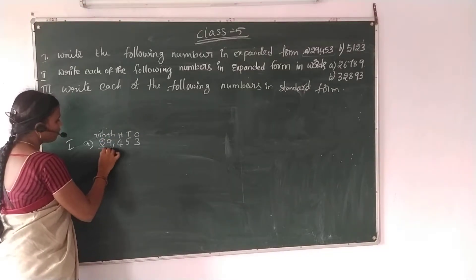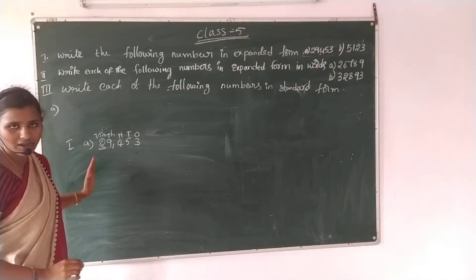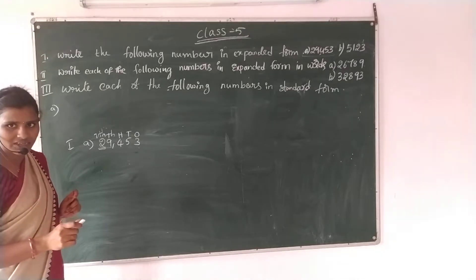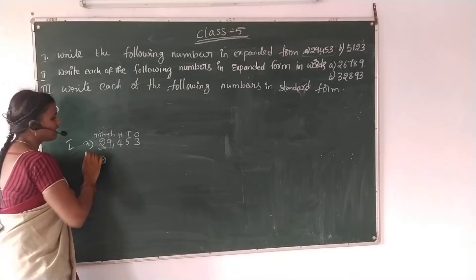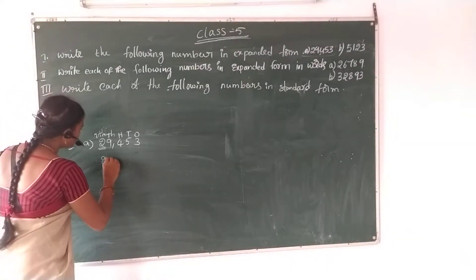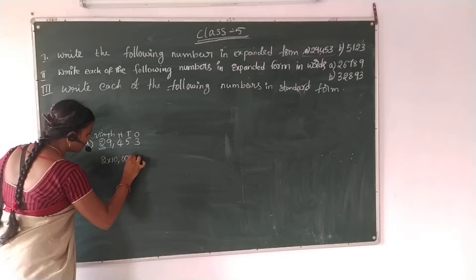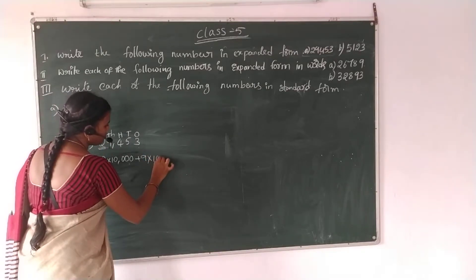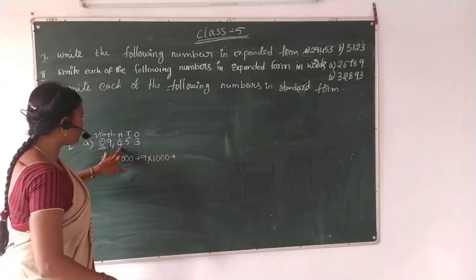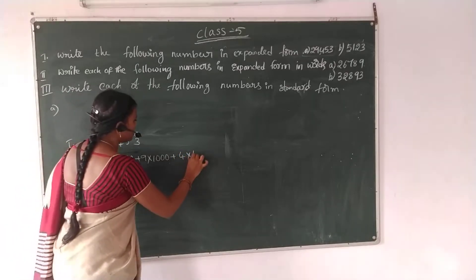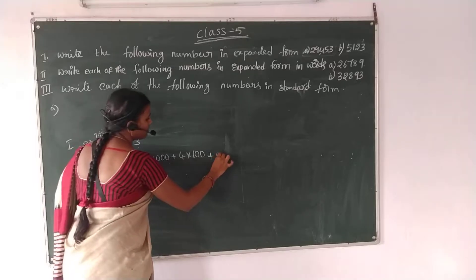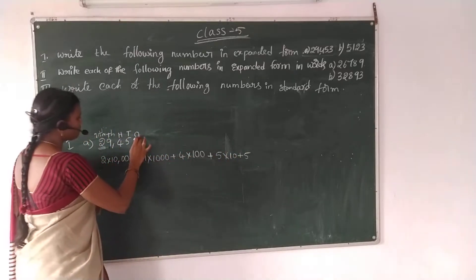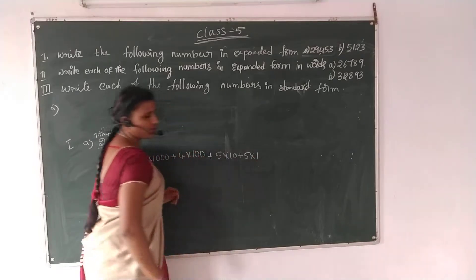Come left to right. First, what is the place value? The number is 2 — its place value is 10,000, so 2 into 10,000. Plus 9 into 1,000. Plus 4 into 100. Plus 5 into 10. Plus 3 into 1.